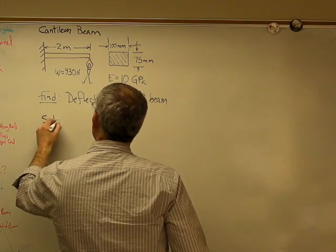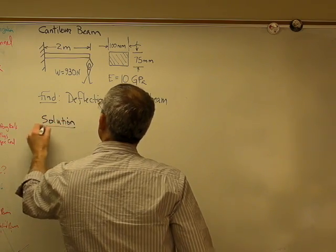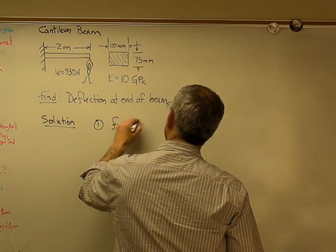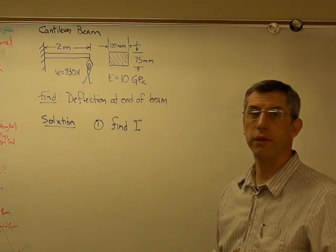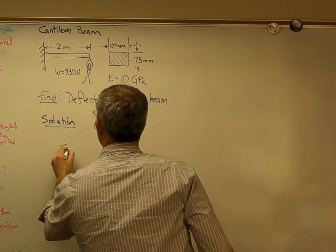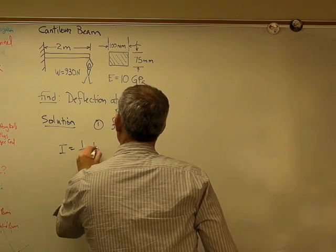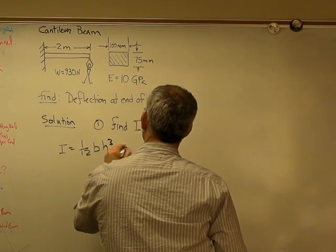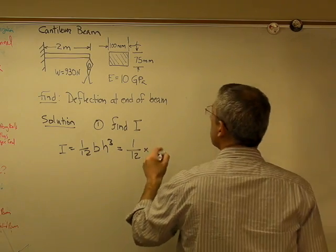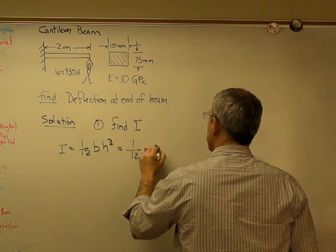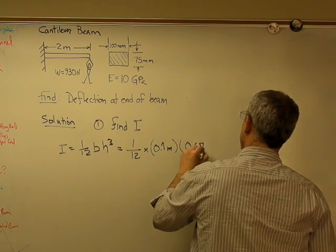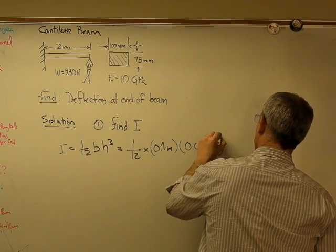So write out the solution here. Step one, we're going to find I. Now I for a rectangle like this is a very simple expression. That's 1 over 12 times the base times the height cubed. So that's 1 over 12 times, I'm going to do this all in meters, so 0.1 meters times 0.075 meters cubed.